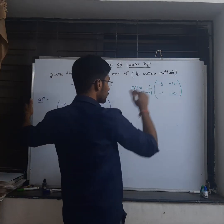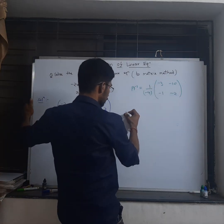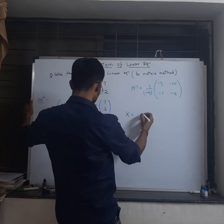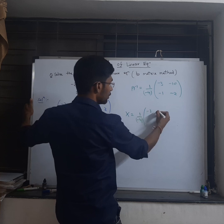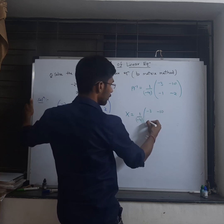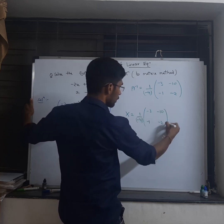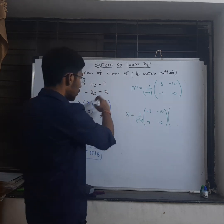So X equals A inverse times B, which is minus 1 by 4 times the matrix minus 3, minus 10, minus 1, minus 2, into this column matrix.